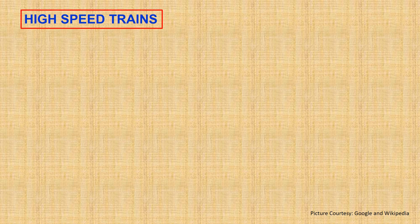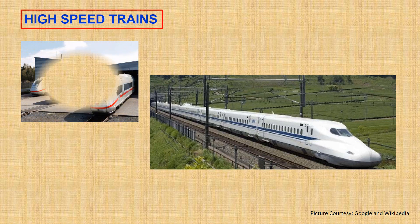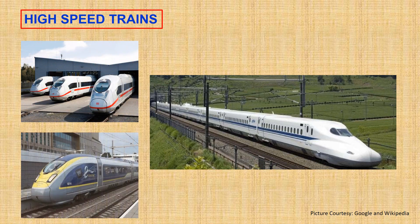High-speed train: a high-speed train is defined as one designed to operate regularly at speeds over 200 km/h. The first country to do this was Japan with their Shinkansen — the so-called bullet train — in 1964. The British and French followed in the 1970s, and Germany in the late 1980s.